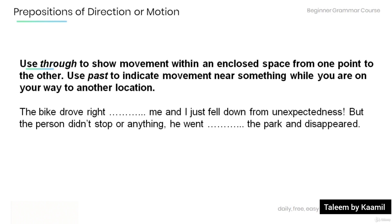We use 'through' to show movement within an enclosed space from one point to the other, and 'past' to indicate movement near something while on the way to another location. Fill in the blanks: 'The bike drove right past me and I just fell down from unexpectedness, but the person didn't stop or anything — he went through the park and disappeared.'